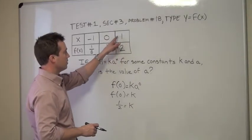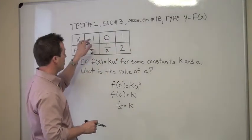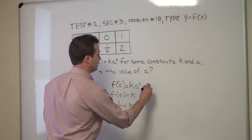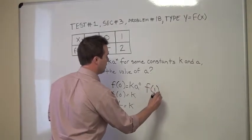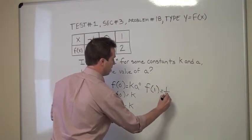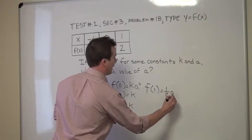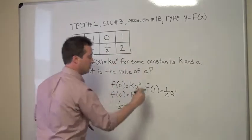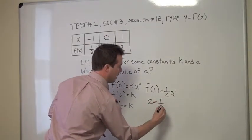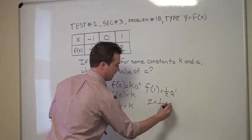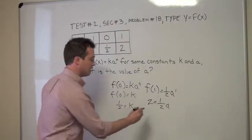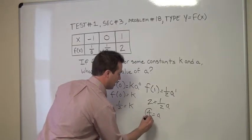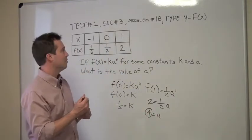The next values I'm going to use are x equals one and f of one equals two. I could use other values but they'd make it harder, so I'll go with the nice easy integer values. So f of one equals k times a to the one, and k is one-half. We know f of one is two, so two equals one-half times a. I'm going to multiply both sides by two, so four is equal to a. So a is four, and that is answer choice D on problem number eighteen.